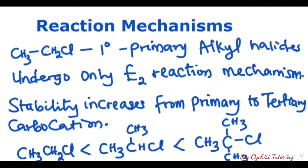We have the primary alkyl halide, where the carbon bearing the halogen group — the Cl — is only attached to one other carbon. This particular primary alkyl halide undergoes only E2 reaction mechanisms. If you want to understand more about classification of alkyl halides, I have a video on that — please check that out to understand what I mean by primary, secondary, and tertiary alkyl halides.